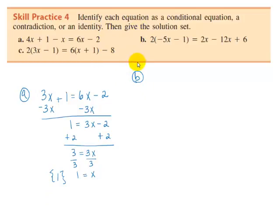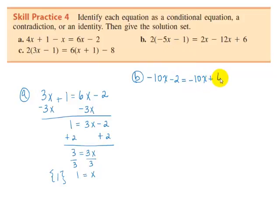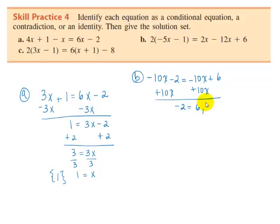For B, you should have found that it is a contradiction with no solution. Distributing gives us negative 10x minus 2 equals negative 10x plus 6. Add 10x to each side to get negative 2 equals 6, a false statement.